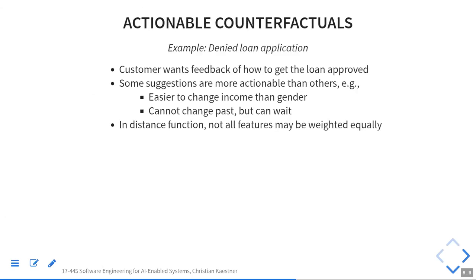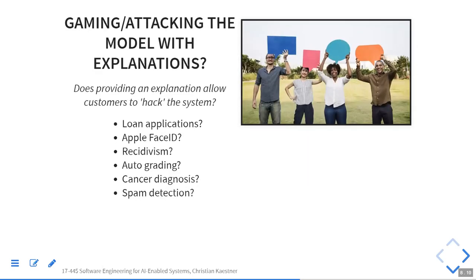There's a question about security: if we give explanations of how you can get your loan, isn't this encouraging people to cheat? Similarly, if we explain face ID on your phone — saying this part of the picture doesn't look right — we're telling someone which parts of the picture the system uses and which it doesn't. Doesn't that make it easier to attack the system and figure out how to unlock somebody's phone?